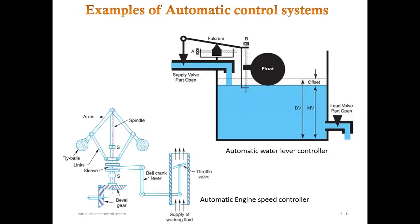An example of an automatic system is the automatic water level controller. As the float rises, the supply valve automatically goes down and cuts off water supply. When the load valve is opened, water level goes down, the float goes down, and pulls up the supply valve. Another example is the automatic engine speed controller using a flyball controller, which is dependent on a throttle valve and bell crank lever to control speed.